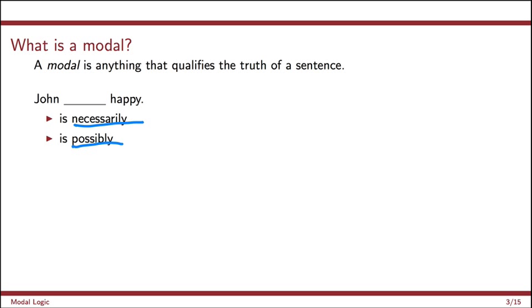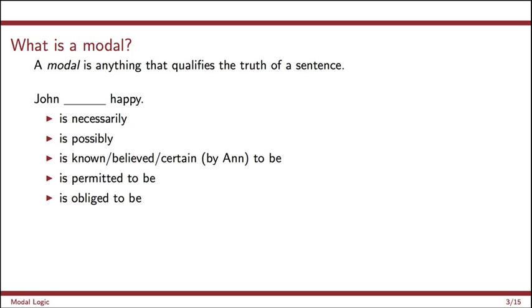There are other types of modals, epistemic or doxastic modals. So John is known or believed or certain by some agents to be happy. There's deontic modal. John is permitted or obliged to be happy. Temporal issues or temporal modals. John is currently now happy. John will be happy at some moment in the future. John is happy at some moment in the past. Action modalities. John can do something to ensure that he is happy. And so on. I'll let you think of there are many other examples you can find in natural language.